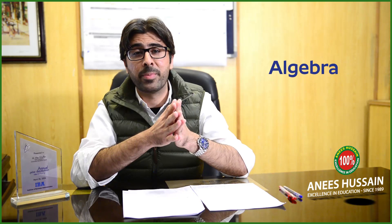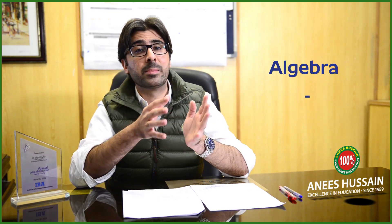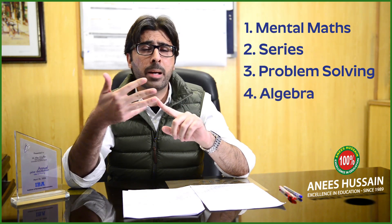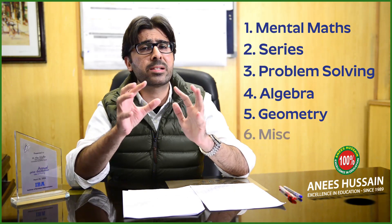Over the past few years, IEBA started adding more topics to the math section. They first added algebra, which has become a very significant part of the test. Then they added geometry, and later some miscellaneous intermediate or A-level topics including permutations and combinations, probability, functions and graphs, arithmetic progression, geometric progression, trigonometry, and a few others. The current IEBA test can include any or all of these six portions: mental math, series, problem solving, algebra, geometry, and miscellaneous A-level topics.